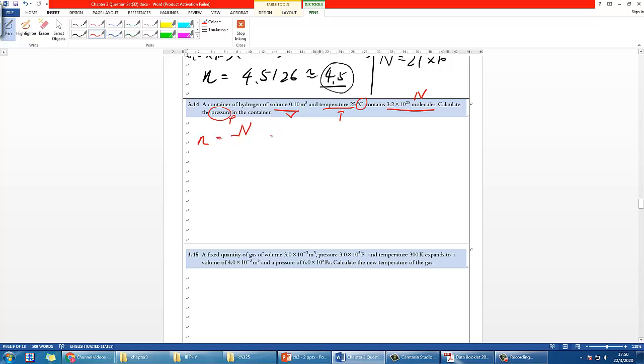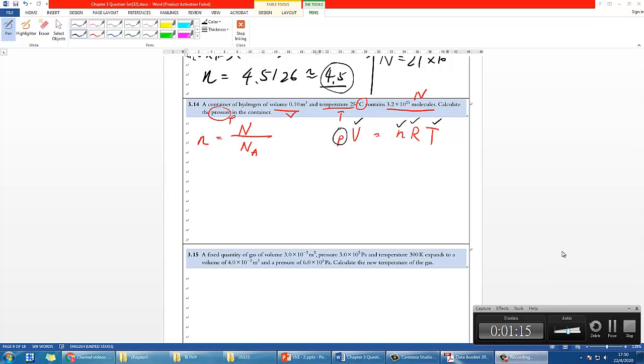Ideally you also need to calculate the mole small n first. Small n equals this huge number divided by the Avogadro constant. After you get the small n, then you should be using ideal gas law PV equals nRT. Let's do a quick check: you want to find P, you have V, you have n, R is from data booklet, and T is also given.